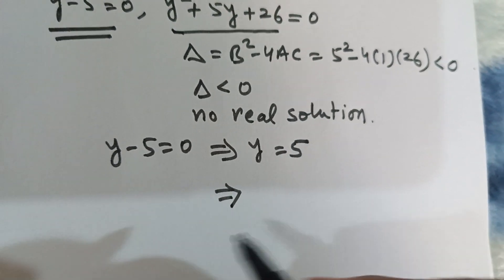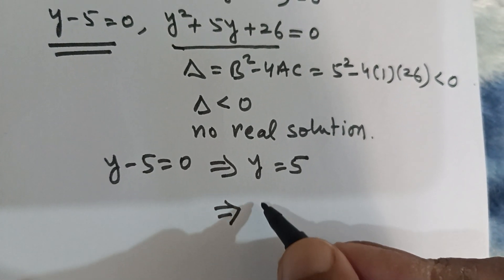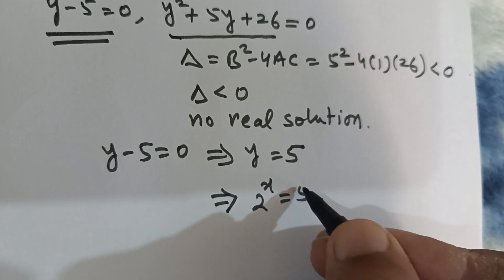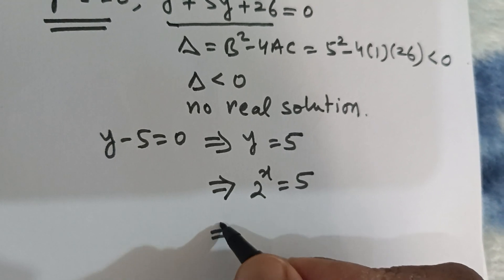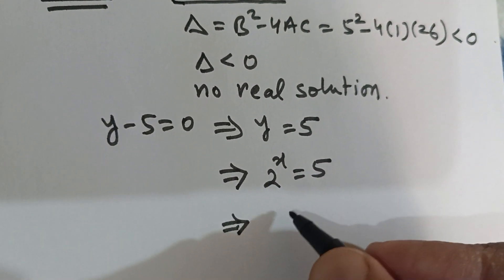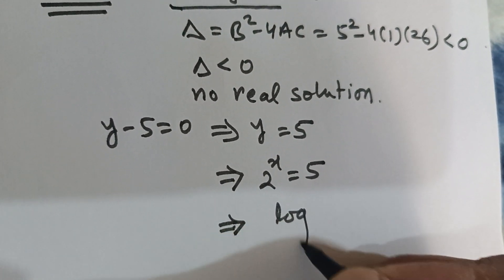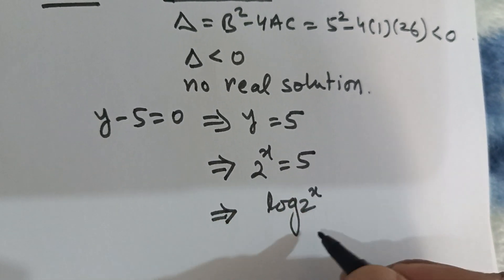But I have assumed y = 2^x, so I get 2^x = 5. If I take logarithm on both sides with base 2...